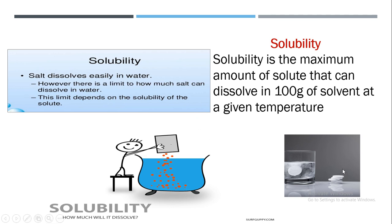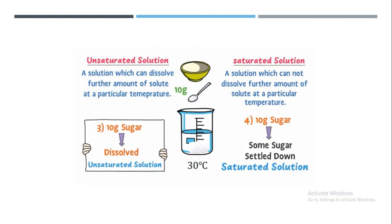Here you can see there are some tablets. We can mix them in water, but there is a limited number of tablets that will mix and form a homogeneous mixture with water without settling at the bottom. So this limit is called solubility. There are two types of solutions: saturated and unsaturated, and the concept of solubility will help us understand this.